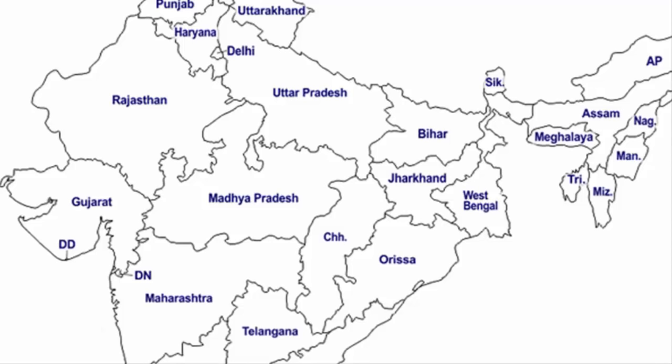The first one is Narmada. This river is actually part of central India. It originates from the Amarkandak Peak in Madhya Pradesh, which lies near the eastern Madhya Pradesh and Chhattisgarh border, also the north-eastern end of the Satpura range. However, the exact source is the Maikal Hills, which are in the eastern part of the Satpuras, in Kavardha district of Chhattisgarh. Hence, the source of the river is right on the hilly border of Madhya Pradesh and Chhattisgarh.